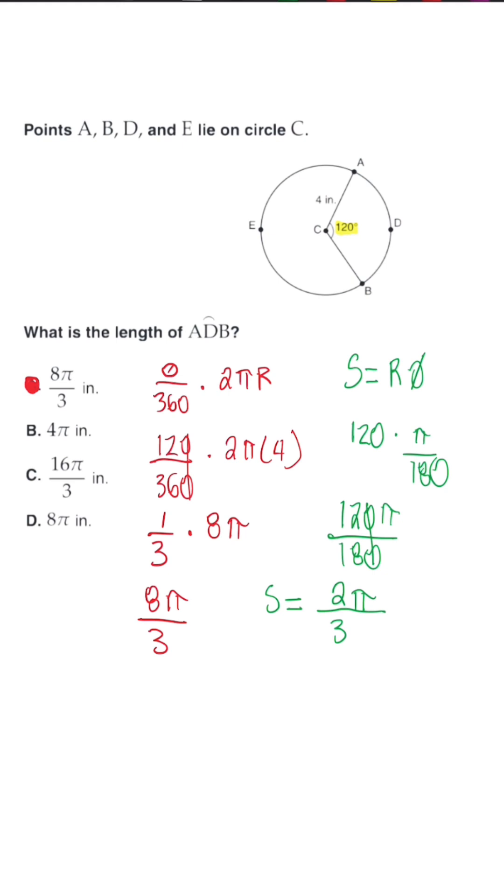So now once we multiply by r, which is 4 inches, they told us, we're going to get s is equal to 8 pi over 3, which would be the same answer. It's always good to know both of these methods depending on how they present the problem to you.